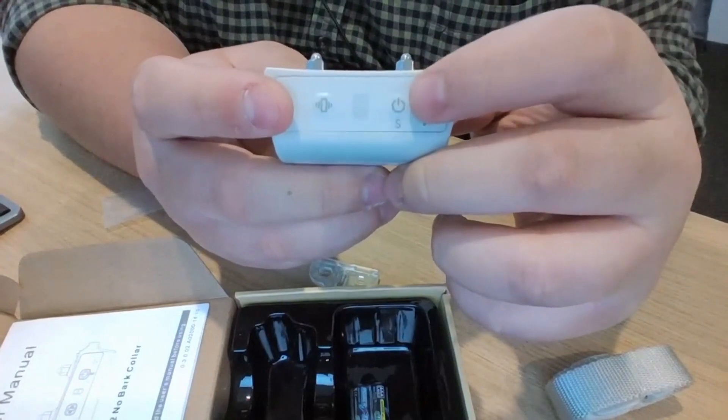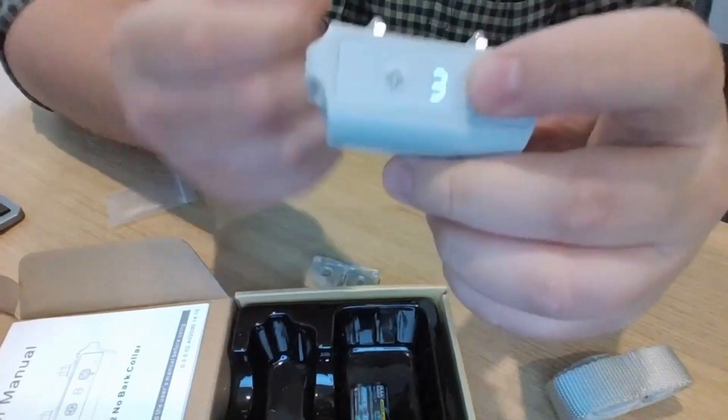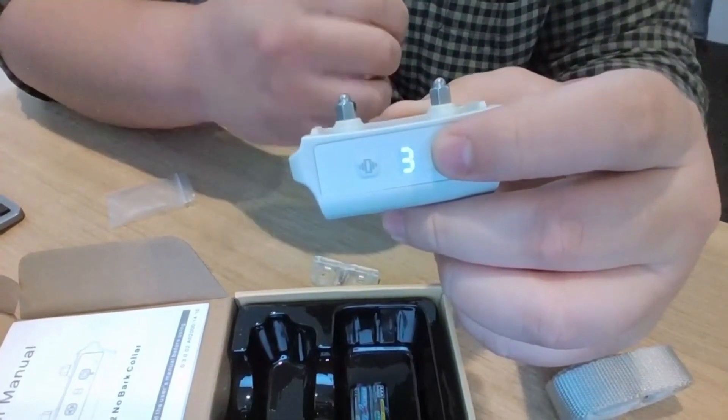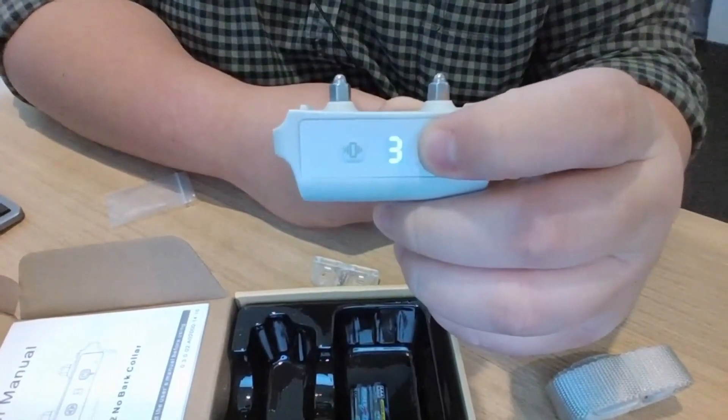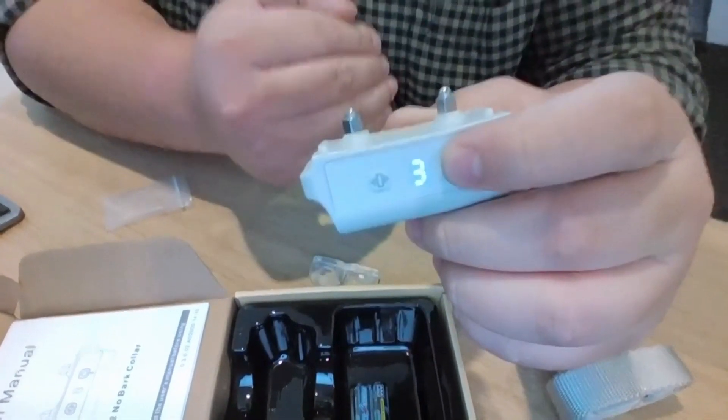The one on the left hand side here is pretty much going to be for the actual power options. This is basically how sensitive of a pickup you want it to activate the actual vibration, so it goes from level one, two, and three. It all depends on how loud your dog barks. The louder they bark, the lower the settings you want to put it on.